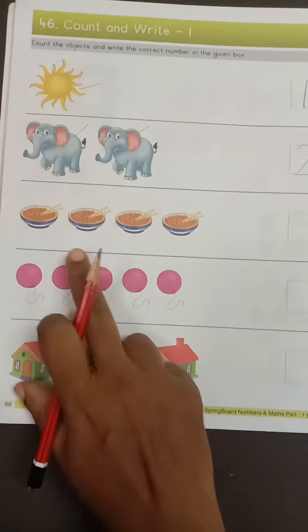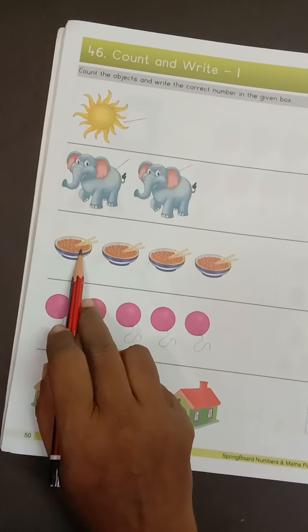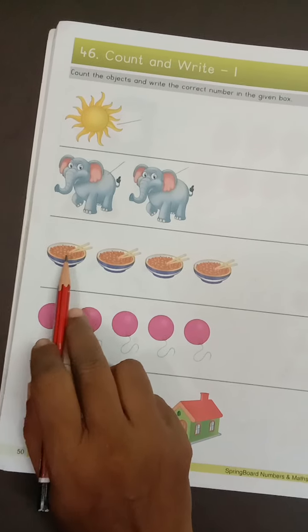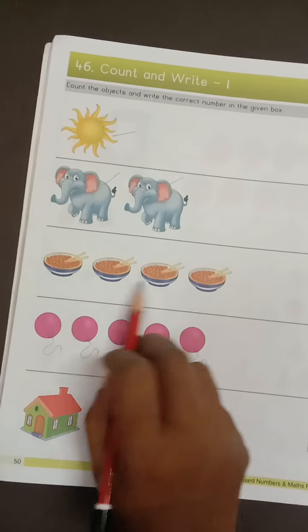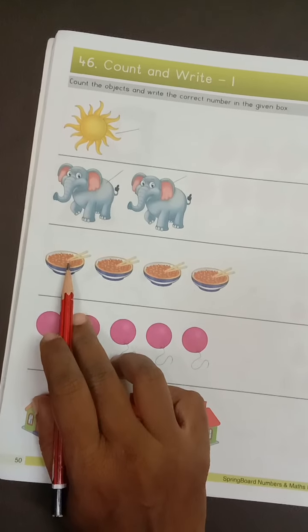Okay kids, next one is? Which picture is this? Soup. Okay? So how many soup bowls? These are bowls with soup.